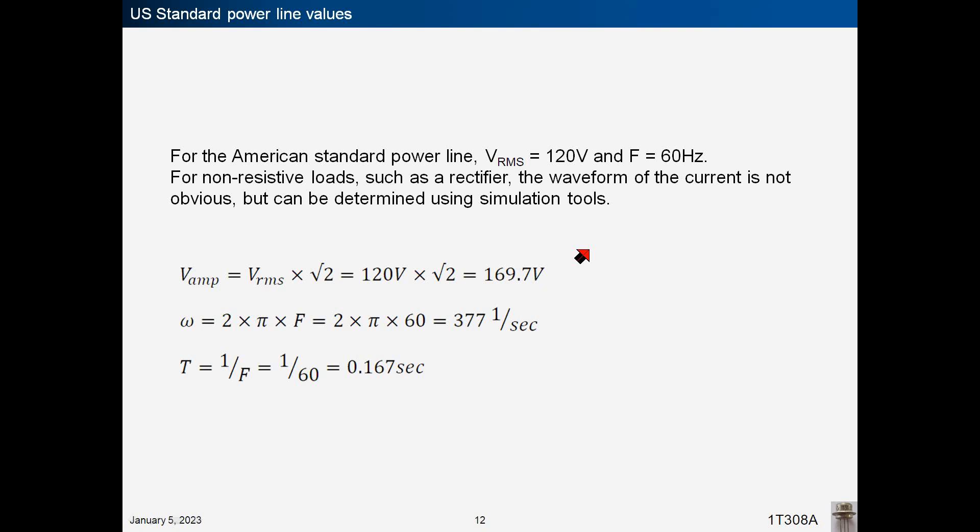For the American standard power line, the RMS voltage is 120 volts, and the frequency is 60 hertz. For non-resistive loads, such as a rectifier, the waveform of the current is not obvious, but can be determined using simulation tools. For sinusoidal waveforms, the RMS voltage and amplitude are related through square root of 2, the angular frequency and frequency are related through 2 pi, and the period is the reciprocal of the frequency.